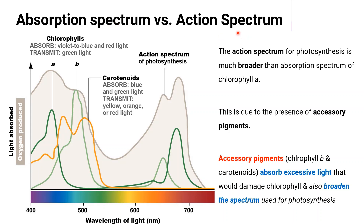— when we overlay them, the action spectrum for photosynthesis is much broader than the absorption spectrum of chlorophyll A. This is due to the presence of accessory pigments, chlorophyll B and carotenoids, which absorb additional wavelengths of light.